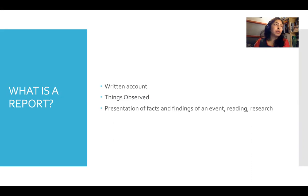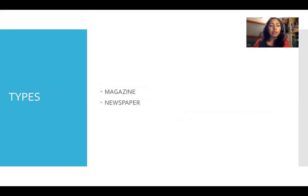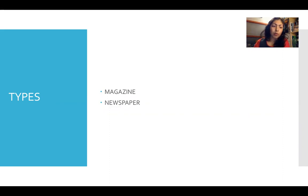It's a written account of things that you've observed — it's as simple as that. Now in your IASC paper, you could be asked to write a report for a magazine, like your school magazine, or for a newspaper. For both these reports, the format is basically the same with a few differences here and there.